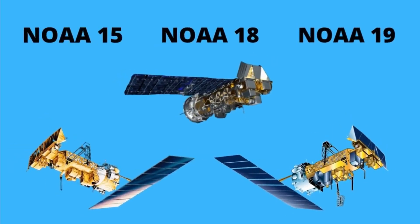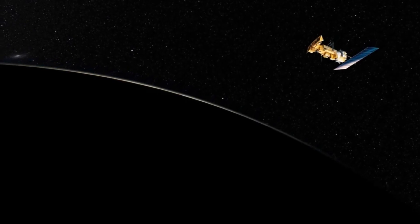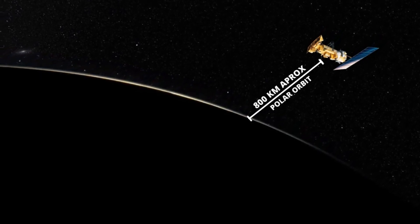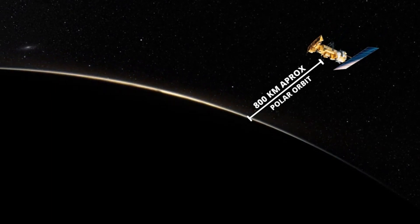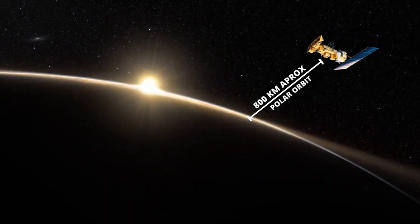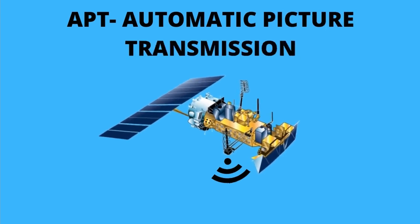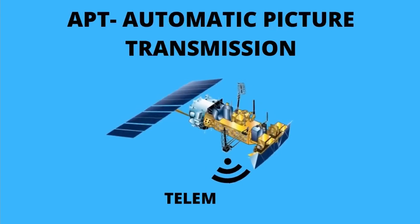There are three satellites that can be received in analog form and they are NOAA 15, 18, and 19. These satellites are low earth orbiting satellites and have a polar orbit. They have an altitude of 800 km from the earth's surface. They transmit the data in the form of APT, that is Automatic Picture Transmission, which is in the form of telemetry data.